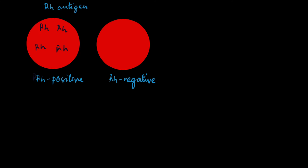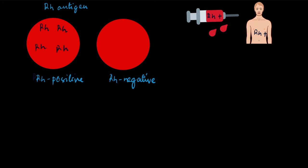Let's look at the compatibilities — which type of blood can be donated to whom. If RH positive blood is donated to an RH positive person, the donor blood has the RH antigen and so does the recipient. It's a match, so they are compatible. Similarly, if RH negative blood is donated to an RH negative person, it's again a match with no problem.